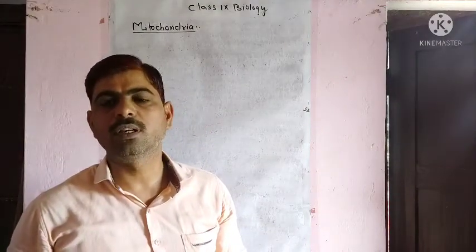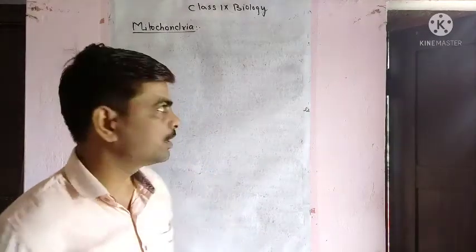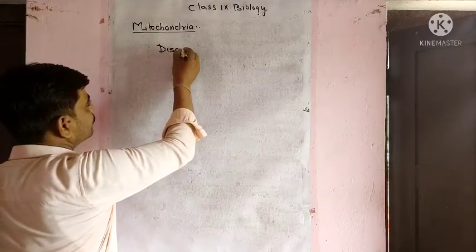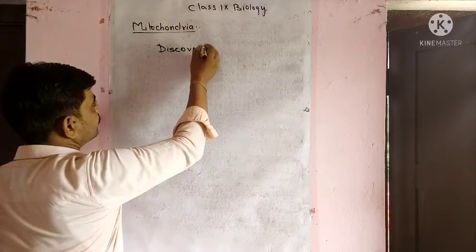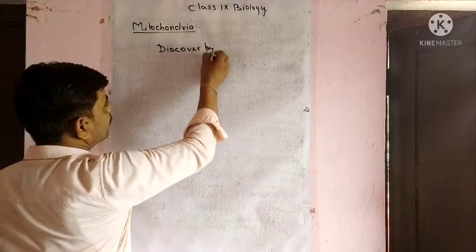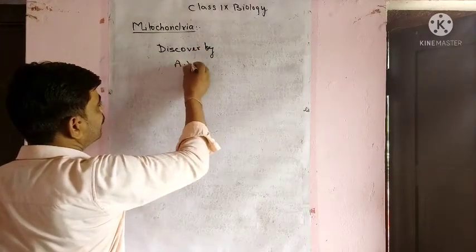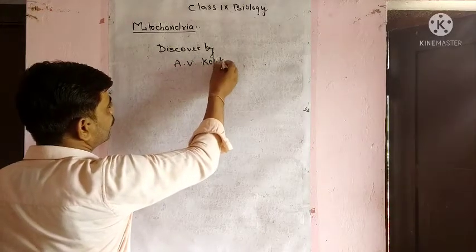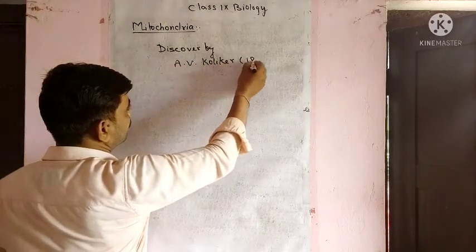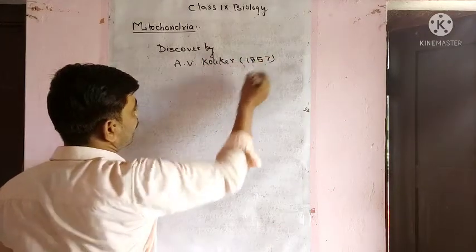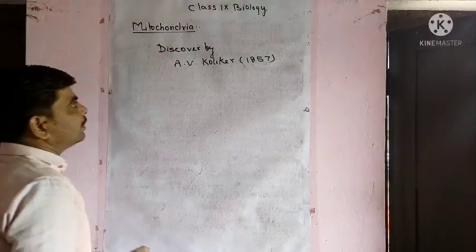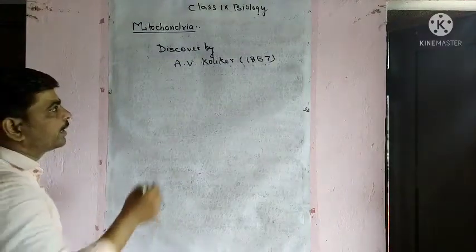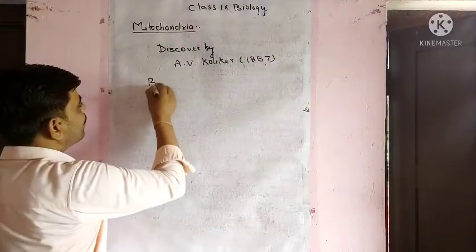Mitochondria was first discovered by A.V. Kölliker in 1857. It was initially named Bioblast by Richard Altman in 1886, and after 12 years it was renamed mitochondria.